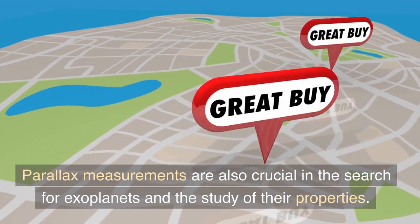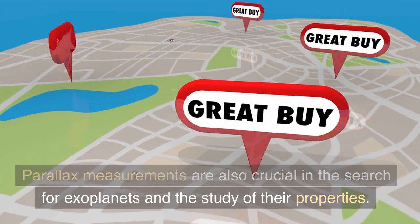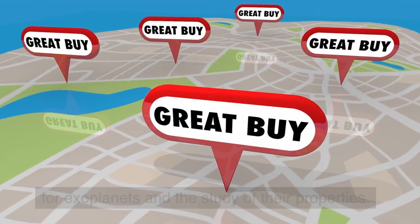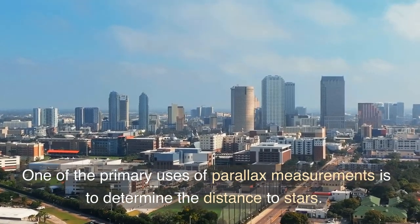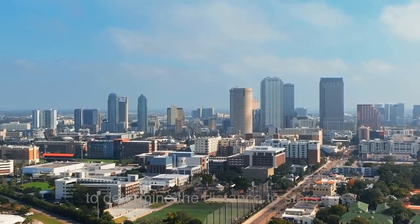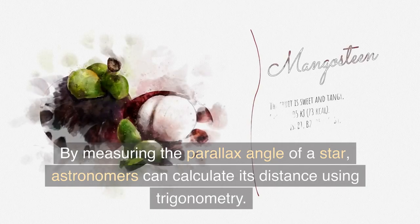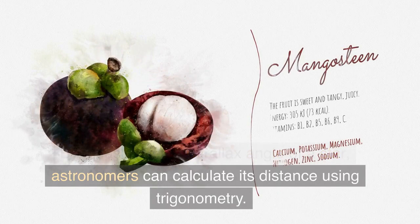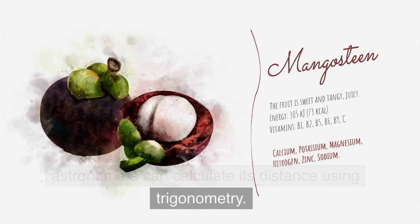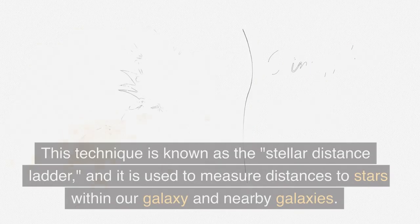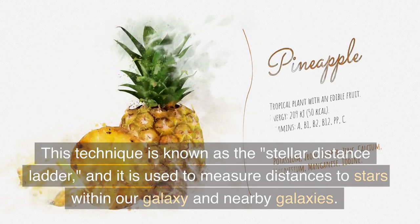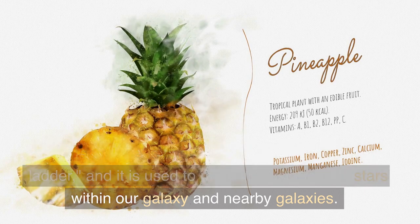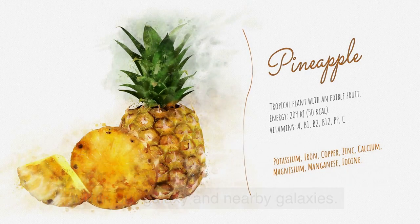Parallax measurements are also crucial in the search for exoplanets and the study of their properties. One of the primary uses of parallax measurements is to determine the distance to stars. By measuring the parallax angle, astronomers can calculate a star's distance using trigonometry — a technique known as the stellar distance ladder — used to measure distances to stars within our galaxy and nearby galaxies.